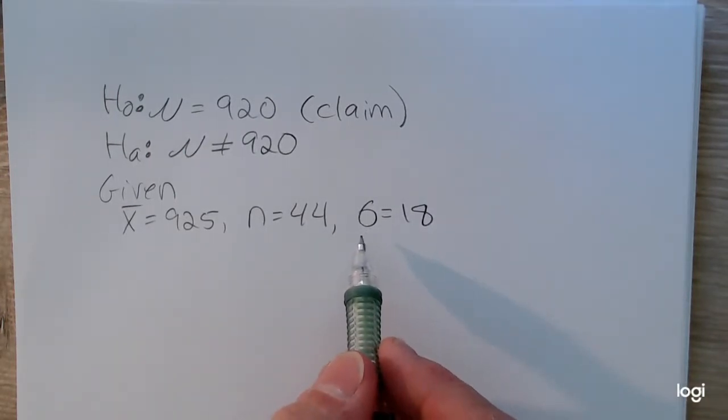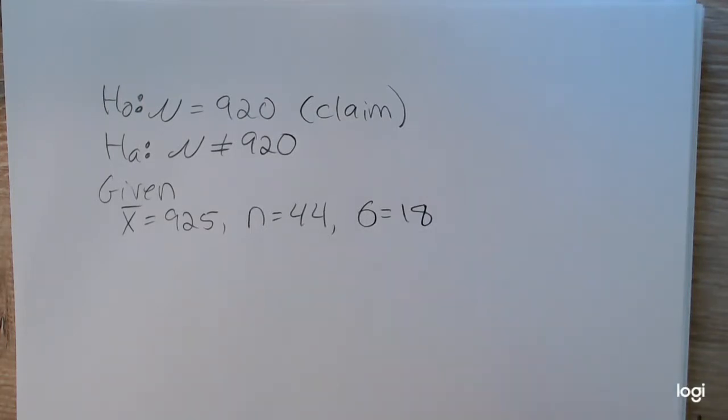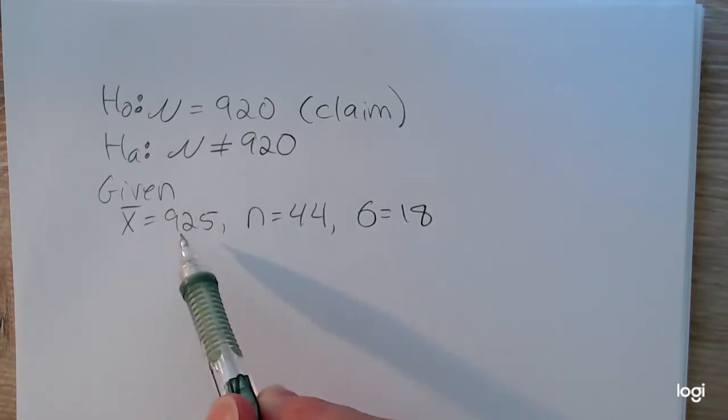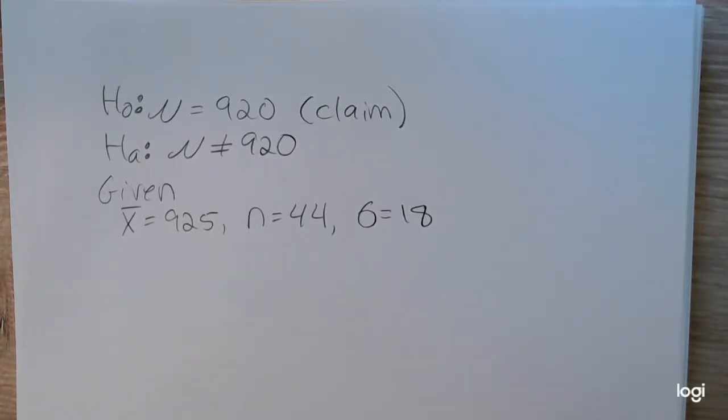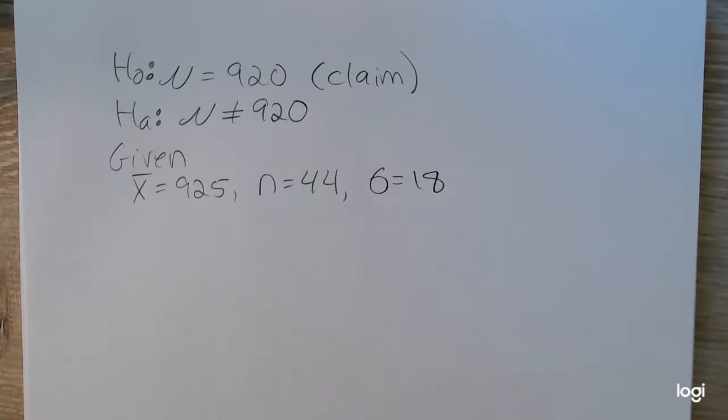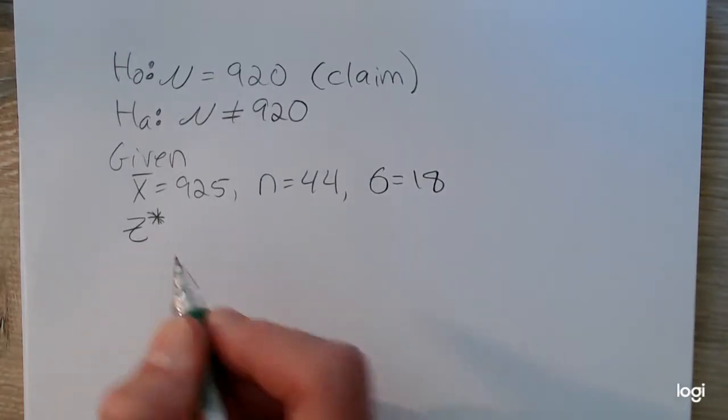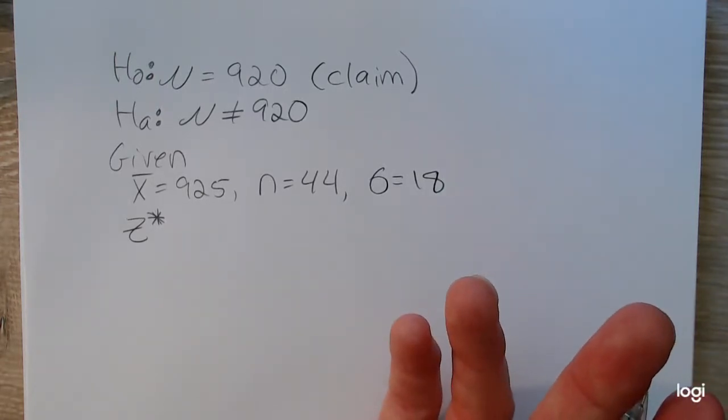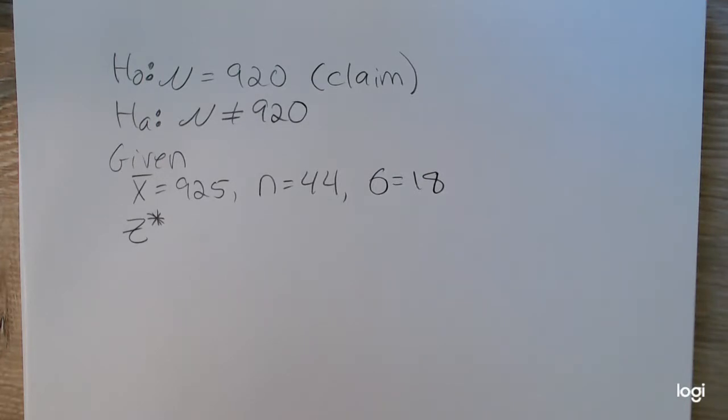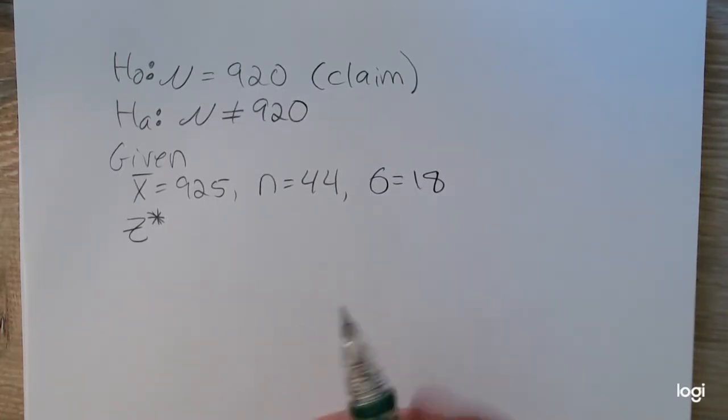When sigma is known, we're going to use a Z score to standardize our test statistic. Our test statistic from the sample in raw form is X bar, but we need to standardize this or convert it to a Z score so we can compare it to our two critical values. Because we have a not equals in the alternative, this is going to be a two-tailed test and I'm going to have two areas of rejection. I always like to put a little asterisk for my test statistic because our critical values are also going to be Z scores.